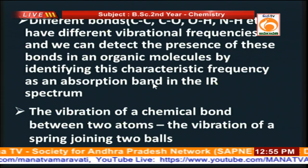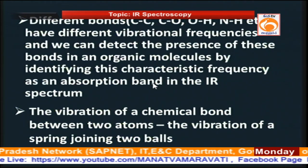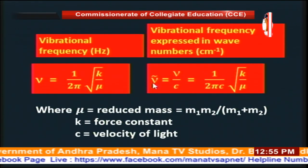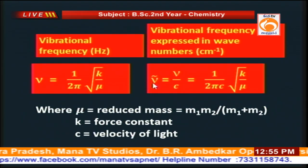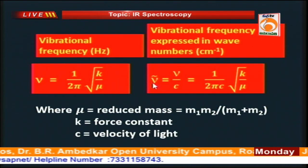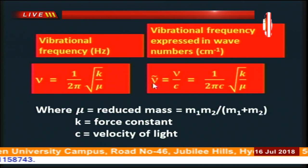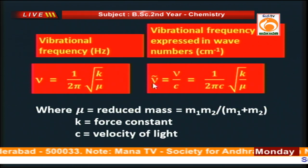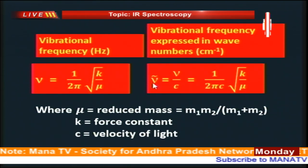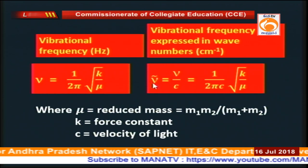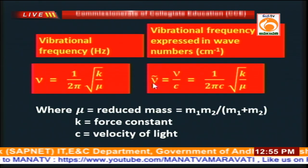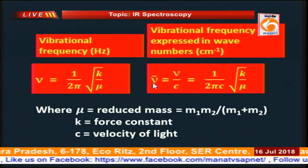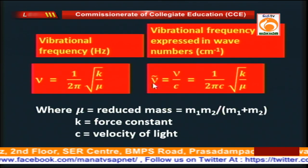The vibration frequency is given by a particular formula. If the vibration frequency is in Hz, then ν = (1/2π)√(K/μ), where μ is the reduced mass. If the vibration frequency is expressed in wave numbers (ν̃) — as is generally used in IR spectroscopy — then ν̃ = ν/c = (1/2πc)√(K/μ). This should be pronounced as nu-tilde, not nu-bar.